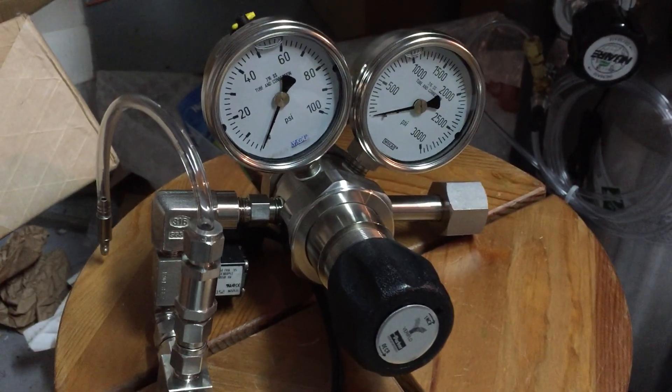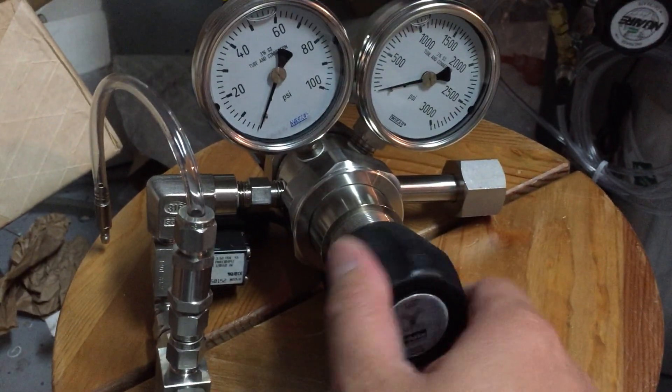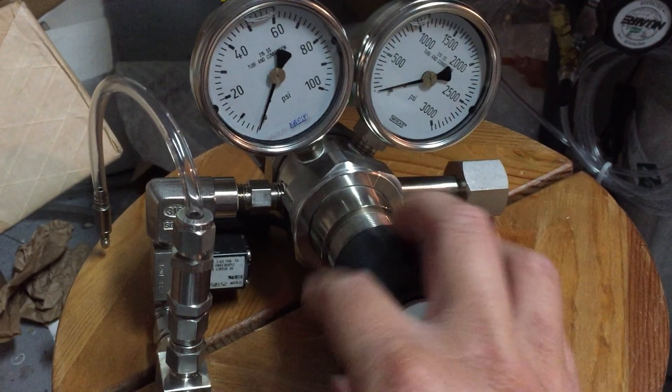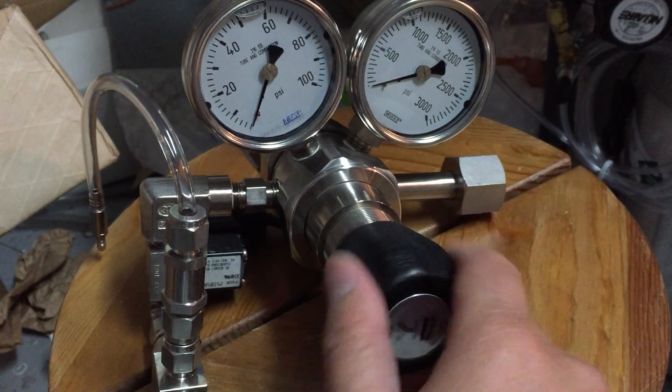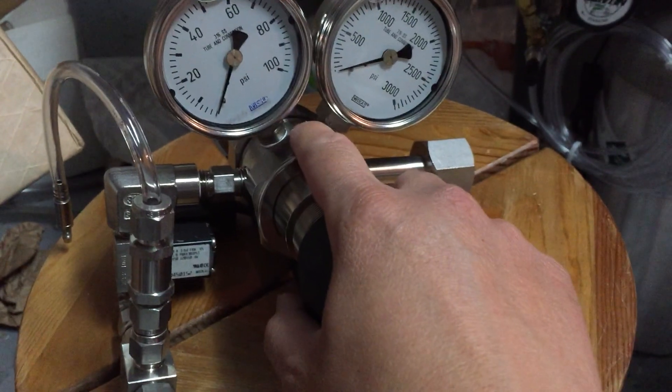So the first thing you want to do is turn the knobs all the way to the left until it stops, so that you shut down the second stage.